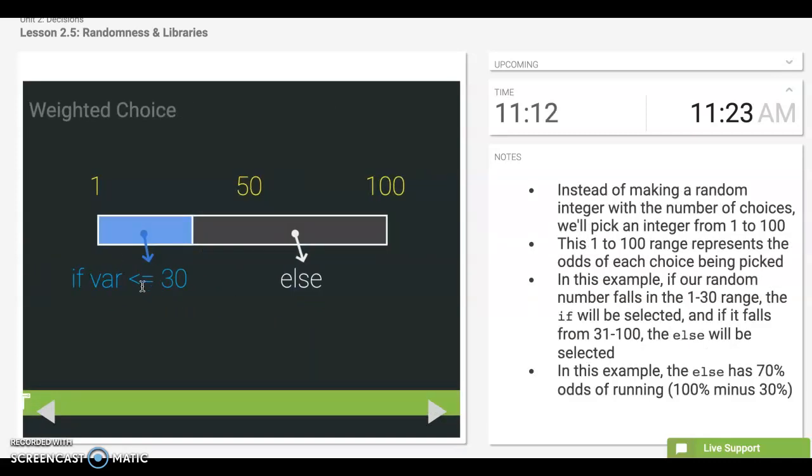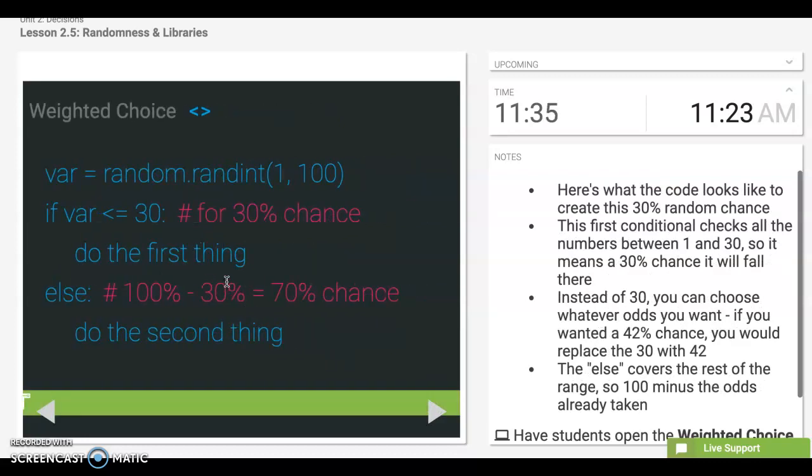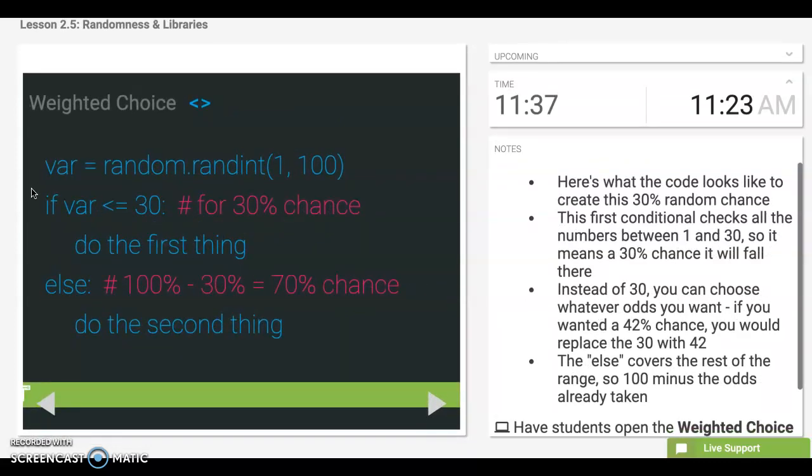So here's what it would kind of look like. If var, var just stands for variable, is less than or equal to 30 on a, if we do a 1 to 100 random choice. So we're just saying if it's less than or equal to 30, we're going to do something. Else, everything between 31 and 70, or 100, is going to be our else option.